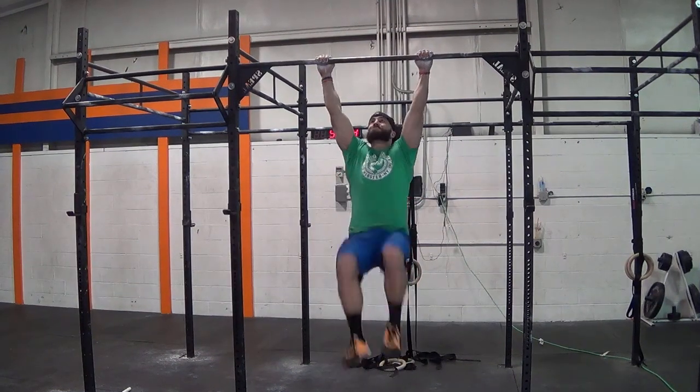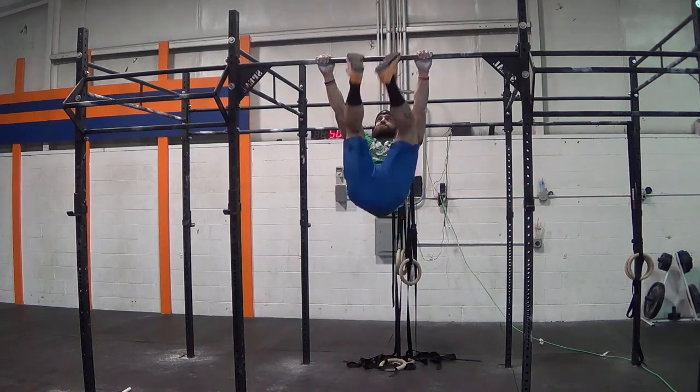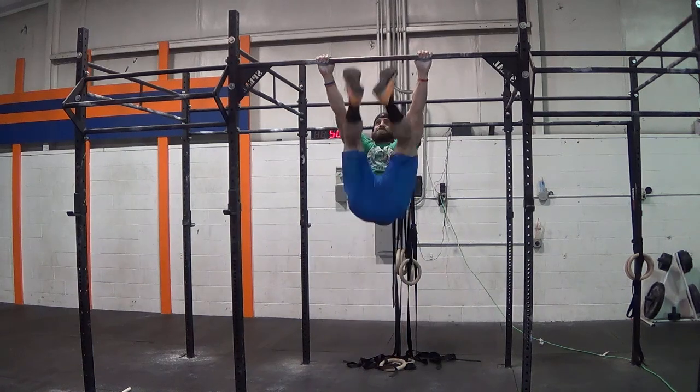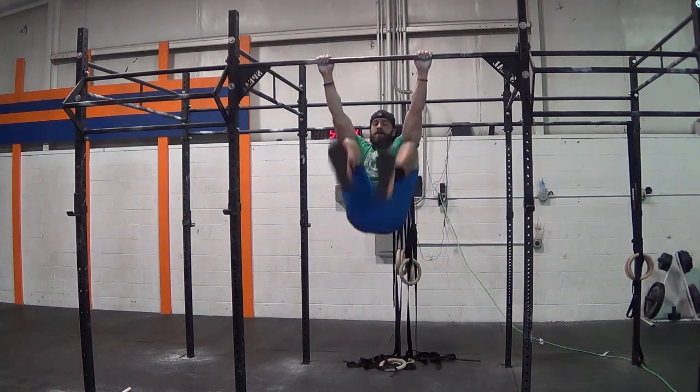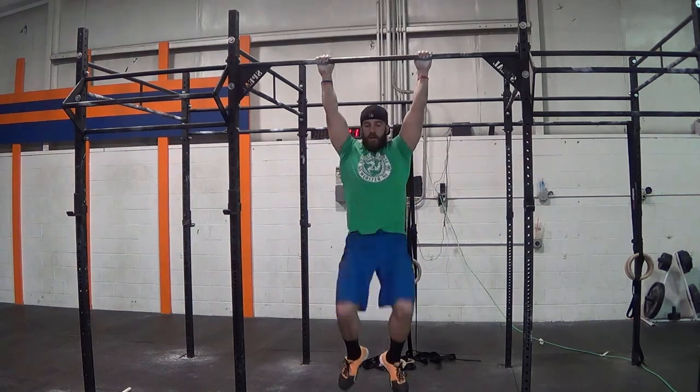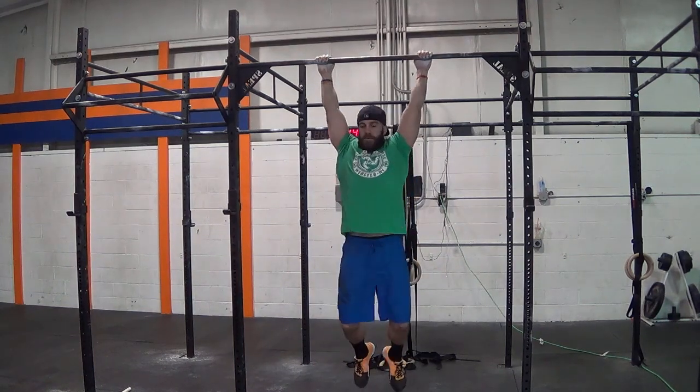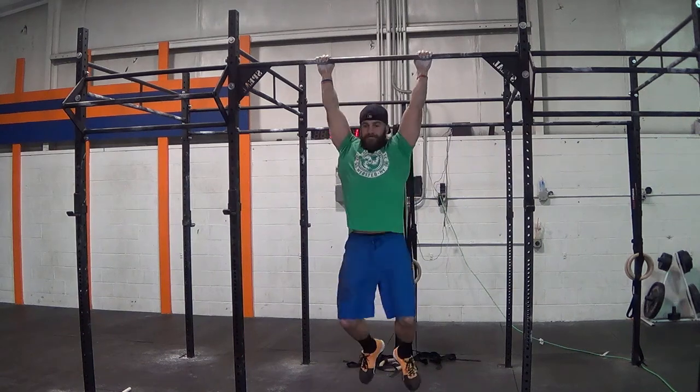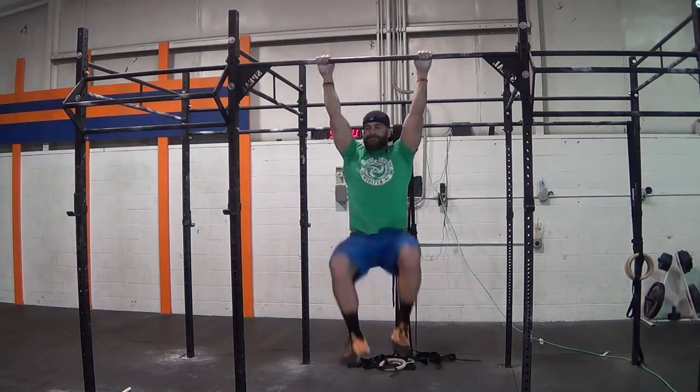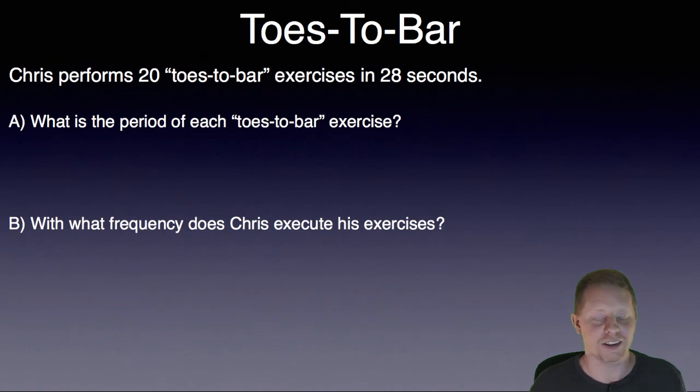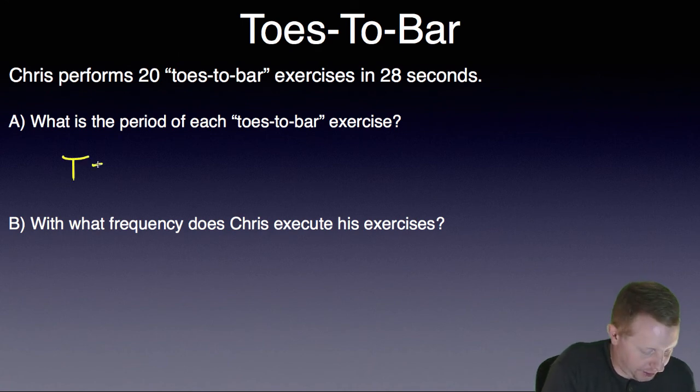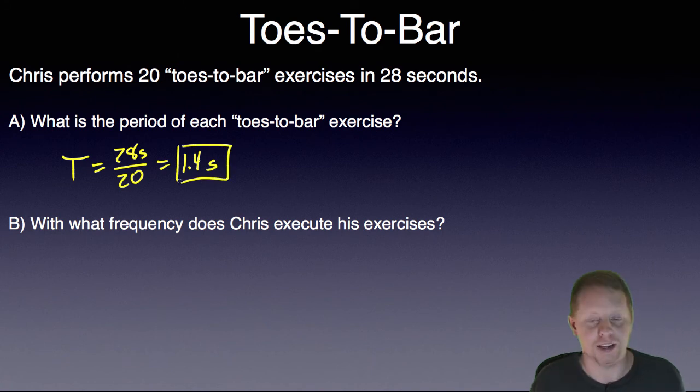Let's move on and take a look at Chris doing toes-to-bar. Chris performs 20 toes-to-bar exercises in 28 seconds. Let's take a look at the problems. What is the period of each toes-to-bar exercise? Well, the period is the time it takes to do one. So that would be 28 seconds. It took him to do 20 repetitions, or 1.4 seconds for each repetition.